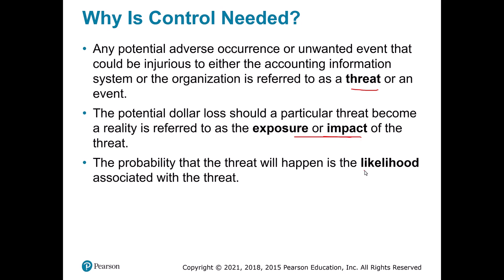We also think about likelihood — the probability a certain event will happen. When I lived in California, earthquakes were very common, so very high likelihood. Here in West Virginia, much less likely. So we think about both impact and likelihood together to decide how to respond to risks. For California, we'd definitely want earthquake plans; here in West Virginia, not so much.